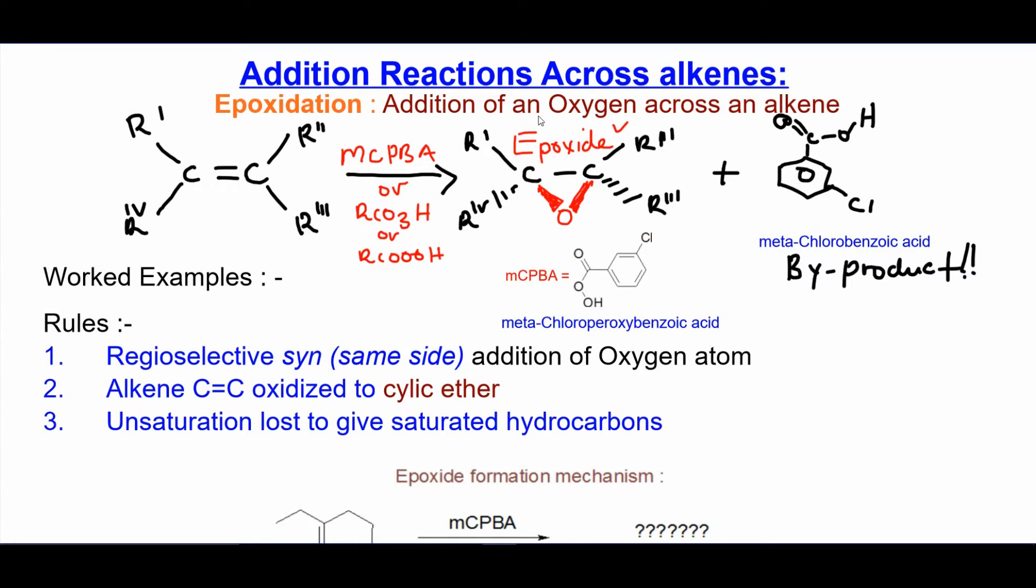Epoxidation is the formation of an epoxide, which is a small cyclic three-membered ether with a general structure like that. So that's an epoxide, it's an ether in itself, it's a cyclic ether, a smaller cyclic ether.